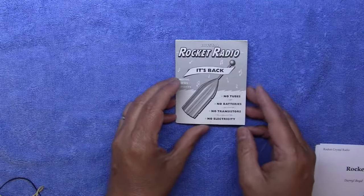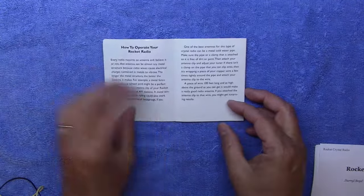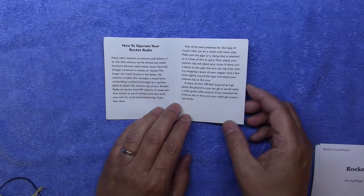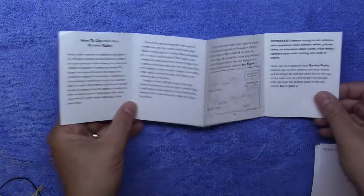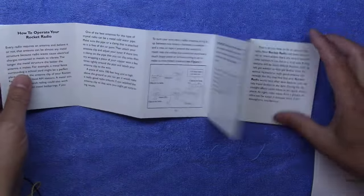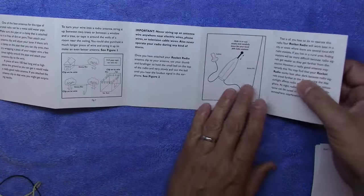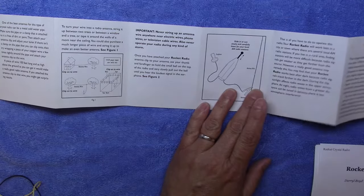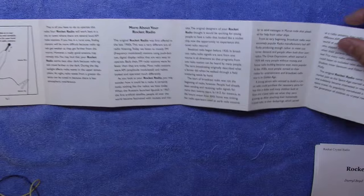It comes with a little retro style manual and it tells you about the radio and how to hook up an antenna. It's got some nice pictorials in here. And it shows the radio itself. And it kind of just keeps folding out here.